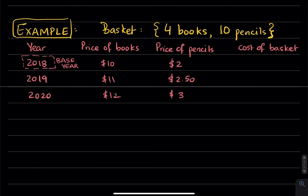So, when we want to compute the cost of the basket, let's make a column here and say, well, the cost of the basket in 2018 is going to be four books, which is in our basket, times the price, which is $10, plus ten pencils times the price of the pencil.